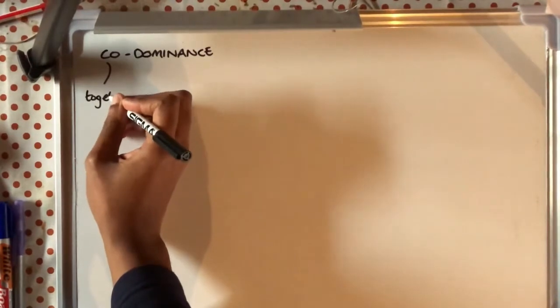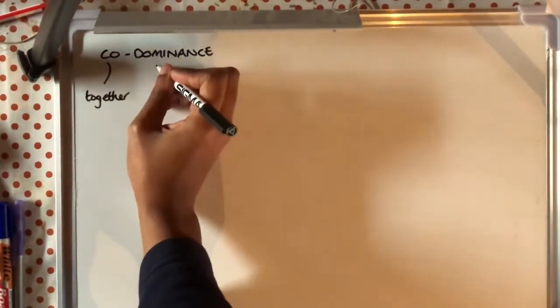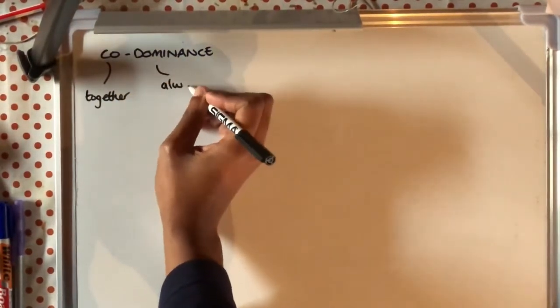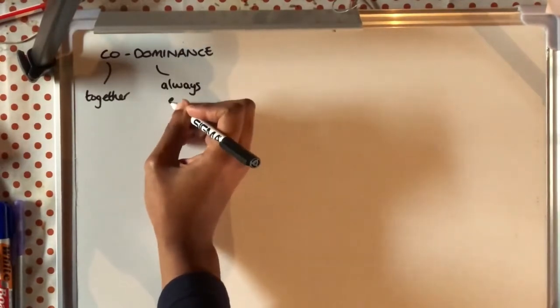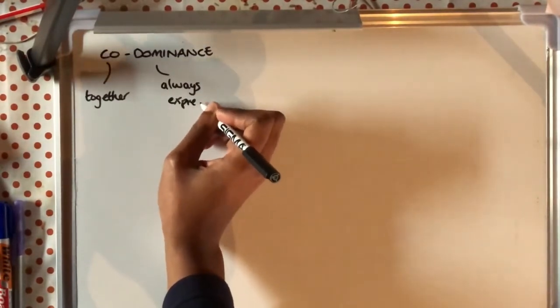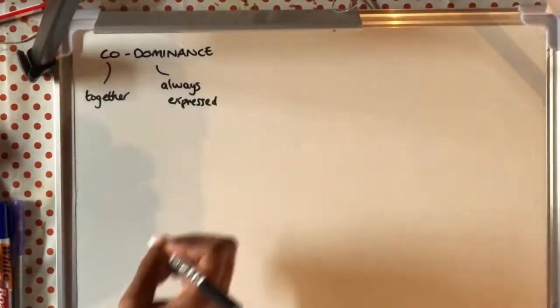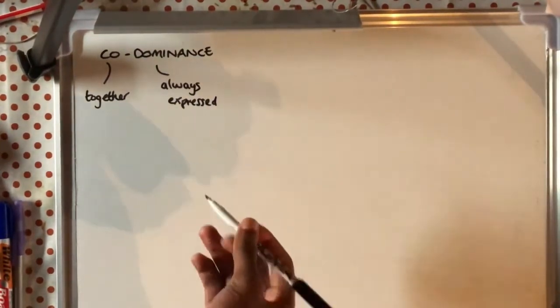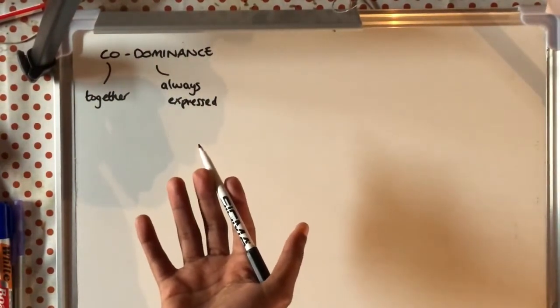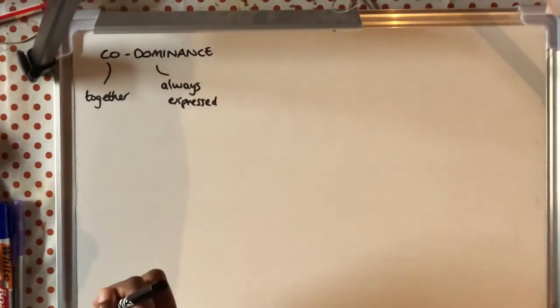So now we're looking at something called co-dominance. What does this mean? If we break down the word we should have an understanding that co represents together and dominant represents always expressed in the phenotype. So how can you get two dominant phenotypes being expressed?